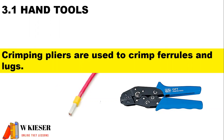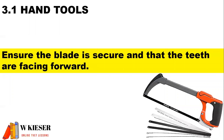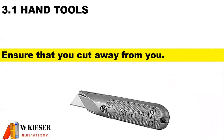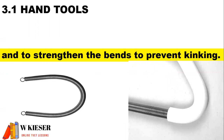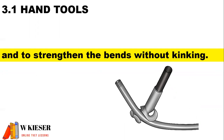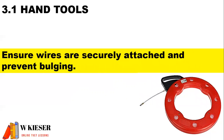Crimping pliers are used to crimp barrels and lugs. A hacksaw is used for cutting wood, plastic, and metal — ensure the blade is secure and that the teeth are facing forward. A cable knife is used for removing insulation from cables; always cut away from you. A spring bender is used to bend PVC conduit and to strengthen the bends to prevent kinking. A hickey bender is used to bend metal conduit and to strengthen the bends without kinking. Draw tapes are used to pull wire through conduit and are made from steel or nylon. Ensure wires are securely attached to the draw tape and that there is no bulging.